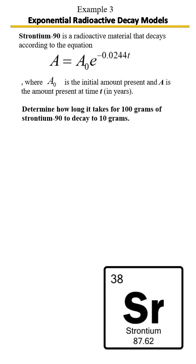Strontium-90 is a radioactive material that decays according to the given equation, where a-sub-zero is the initial amount present and a is the amount present after a certain number of years.